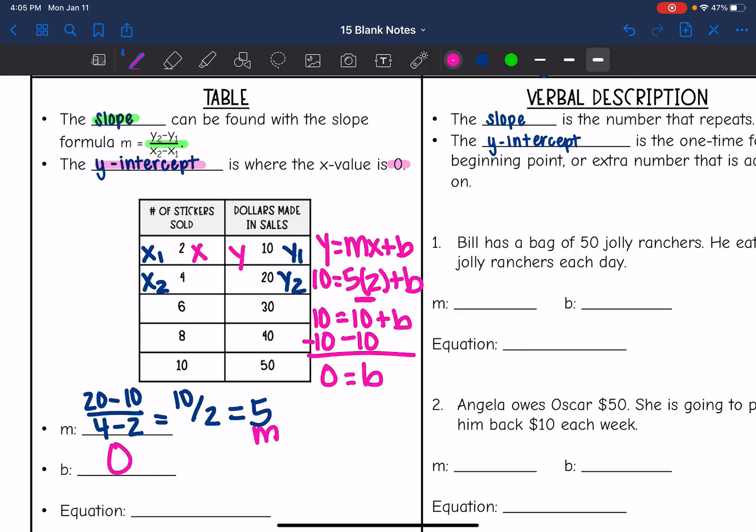Now I have my slope. I have my y-intercept. I can finally write the equation in y equals mx plus b form. It would be y equals the slope 5 times x. And then I don't have to put plus 0 since the y-intercept is 0.